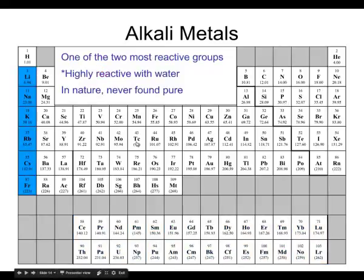Now we get into some actual family names. This very first column, with the exception of hydrogen — because hydrogen is not a metal — these are called the alkali metals. The alkali metals are some of the most reactive metals on the periodic table. They are so reactive that when you get down to potassium or rubidium, these things are explosive with water. Because they are so reactive, you never find them pure in nature — they're always bonded to something else.